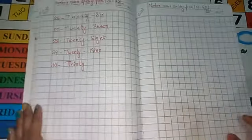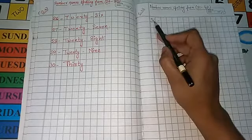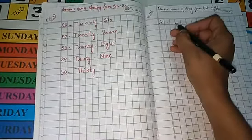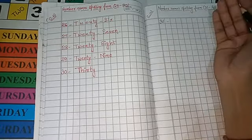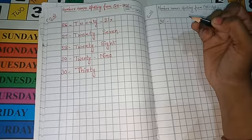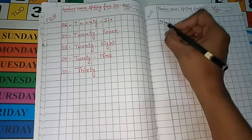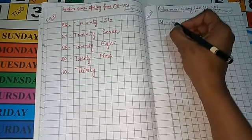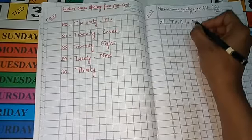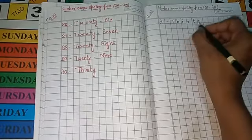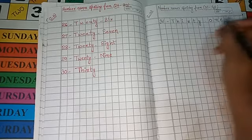So your first number is number 31. The spelling of number 31 is - write it, take out your math copy, take out pencil, you will write by pencil. So write your first number is 31. You have to learn this. The spelling of number 31 is T-H-I-R-T-Y, 31, O-N-E, 1.